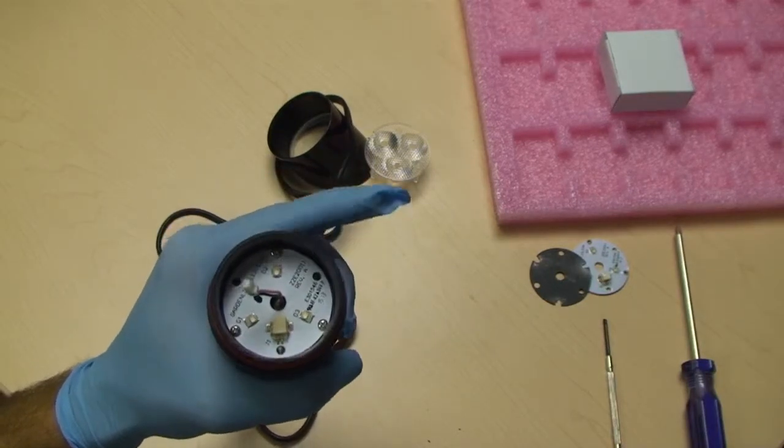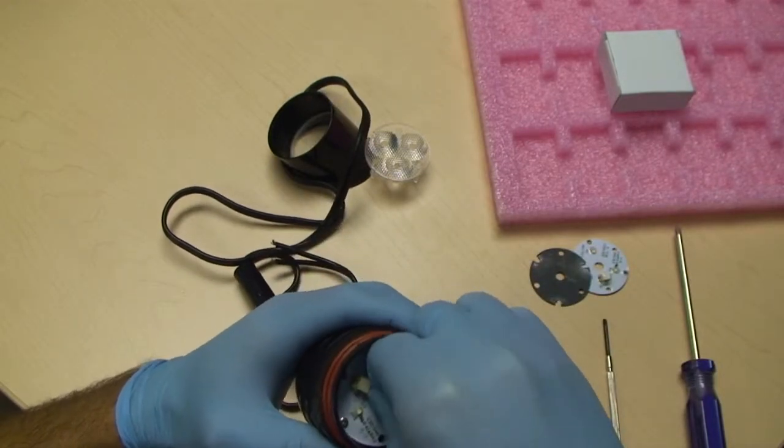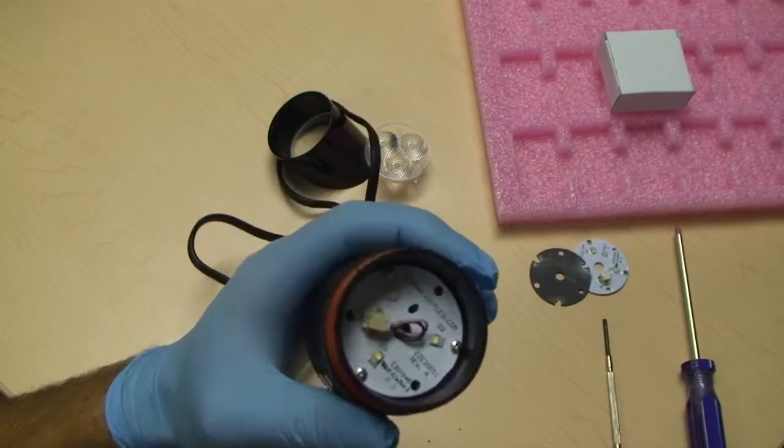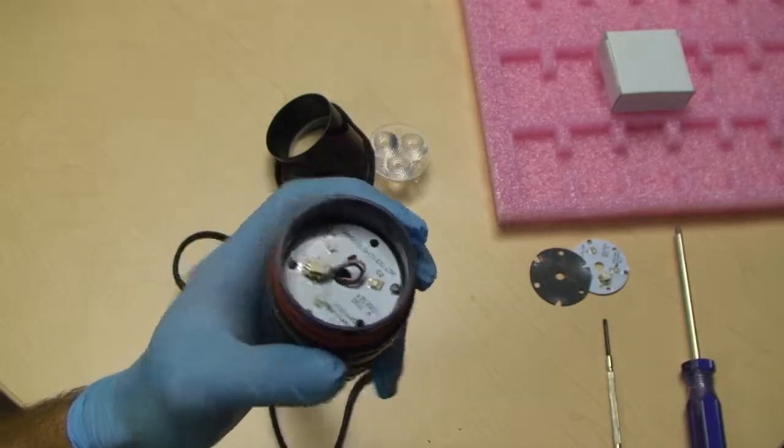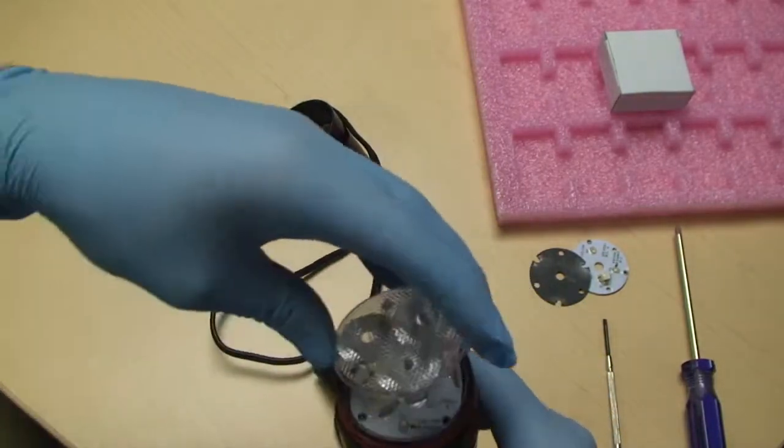The next step, reconnect the plug to the board connector. Be careful not to touch the LEDs with your finger. Replace the optic by aligning the optic legs with the correct holes on the board.